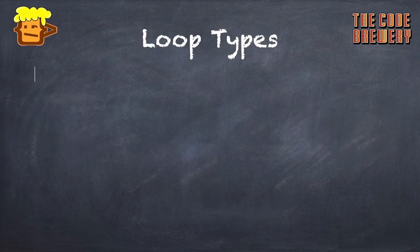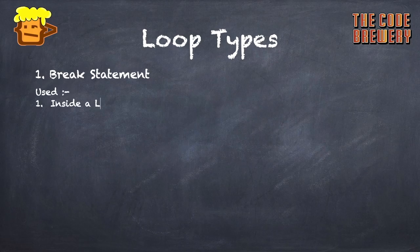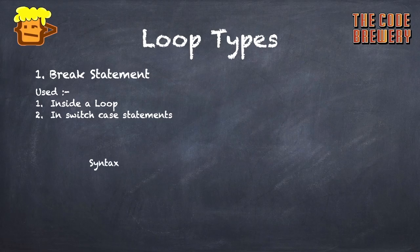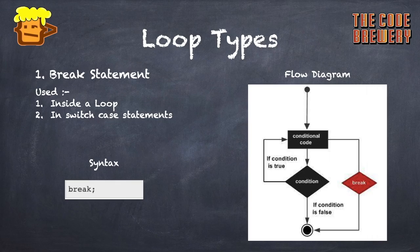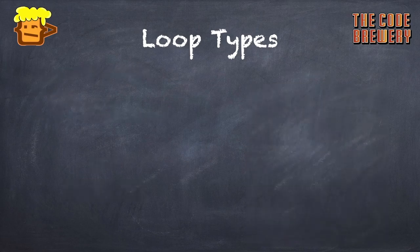Let's look at them individually. First, the break statement. It is used inside a loop or in a switch-case statement. Its syntax is simply: break; — just the keyword and a semicolon. From the flow diagram, when a break statement is encountered inside a conditional code block, we exit the loop immediately and the code continues after it.